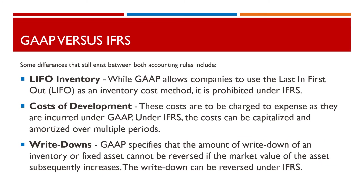Some differences that still exist between both accounting rules include: LIFO inventory — while GAAP allows companies to use last-in-first-out as an inventory cost method, it is prohibited under IFRS. Development costs are charged to expense as they are incurred under GAAP, but under IFRS the costs can be capitalized and amortized over multiple periods. For write-downs, GAAP specifies that the amount of write-down of an inventory or fixed asset cannot be reversed if the market value of the asset subsequently increases, whereas the write-down can be reversed under IFRS.